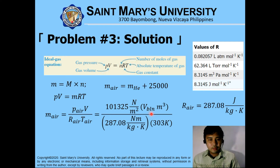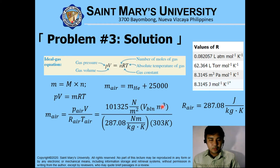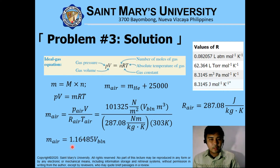That pressure multiplied by the volume of the balloon equals meter cubed times R of air, which is 287.08 Joules per kilogram. Joules in the base SI system is equivalent to Newton meter, and temperature is 303 Kelvin. This will cancel out and remain only in meters. Newton meter on the numerator side cancels, Kelvin will cancel, and this one will be reciprocated on the numerator. Therefore, our mass of air is equivalent to 1.16485 times V of the balloon.